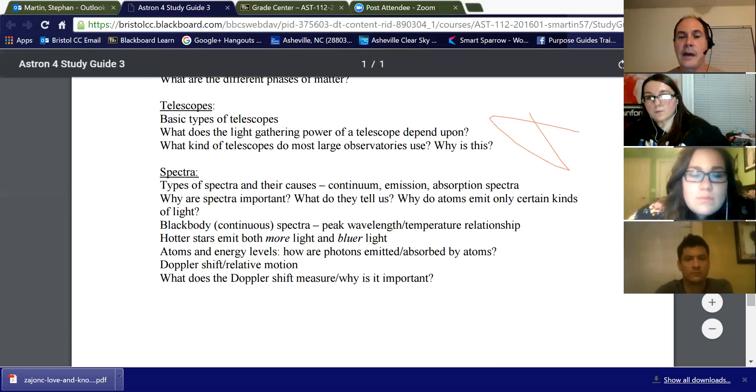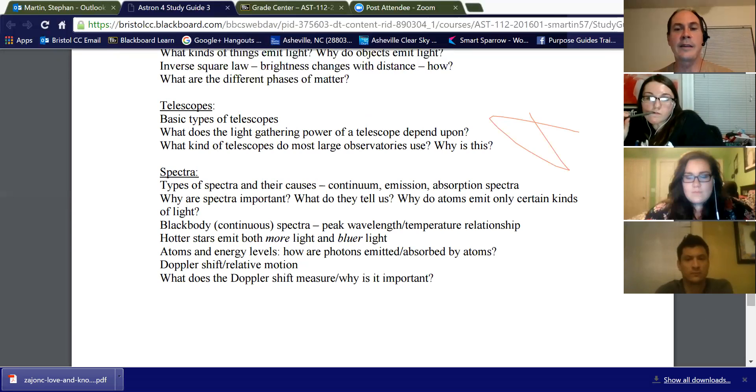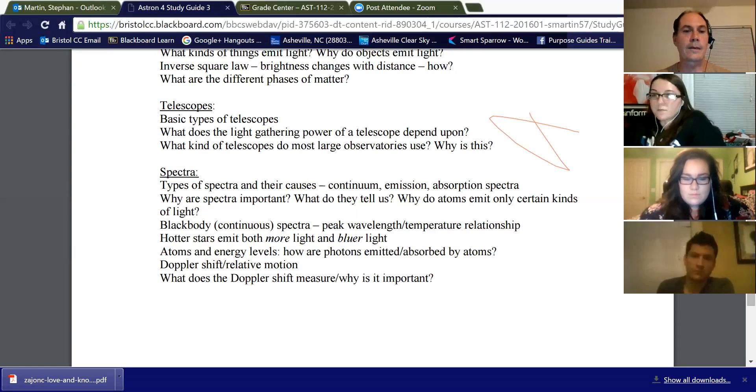Absorption spectra are the opposite. When light from a distant object passes through a cool gas cloud, certain wavelengths get absorbed, and that produces an absorption spectra. Emission and absorption spectra are very important, because you look at the lines that are present in the spectrum, and it tells you what elements are present in that object. So that's how we know that the Andromeda Galaxy, which is two million light years away, has hydrogen gas in it, because we can see the lines from hydrogen in the spectrum.